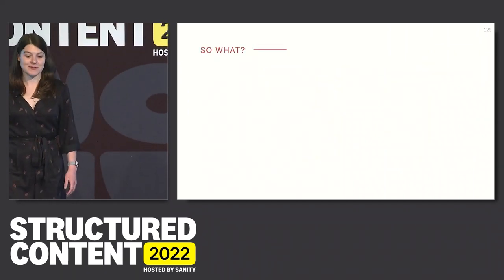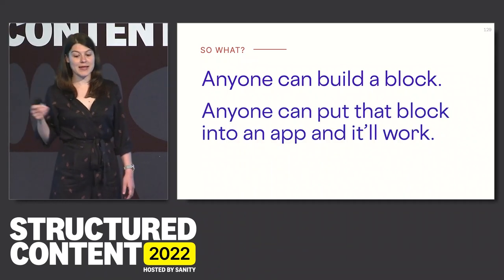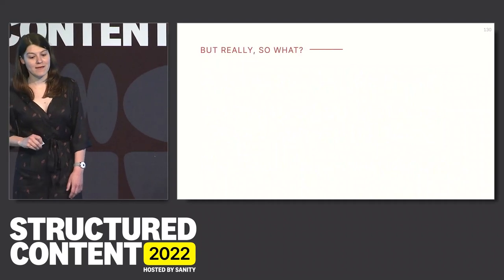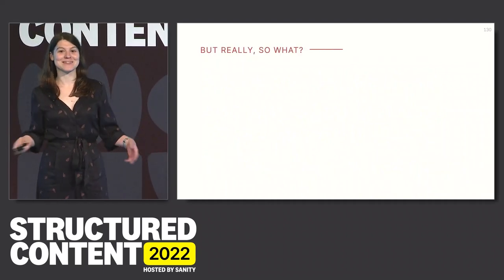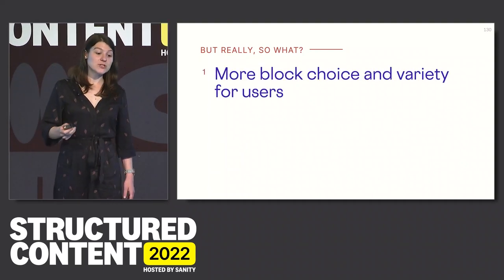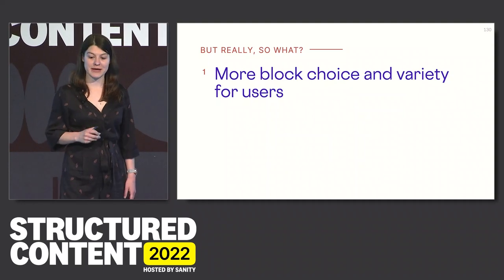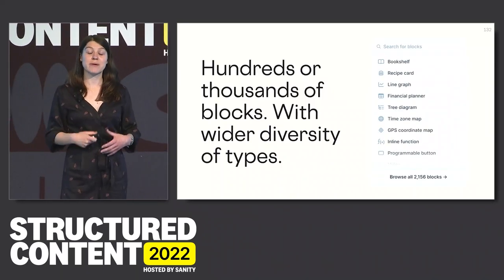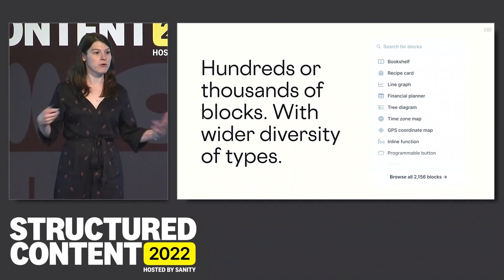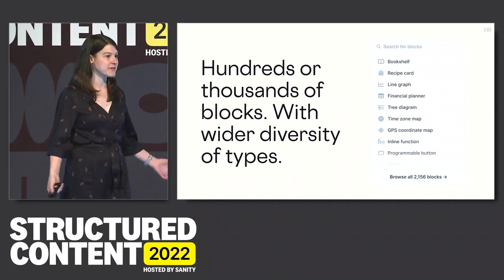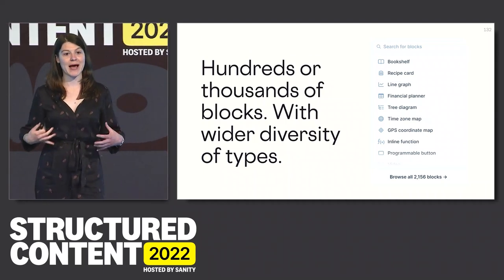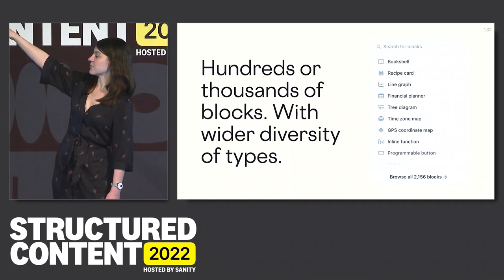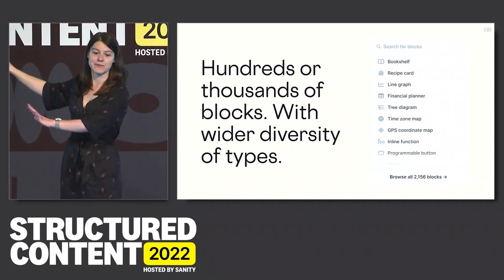So what does this mean practically for users? Well, users should have more block choice — a much wider variety of blocks to pick from. At the moment they have a limited list of around 30 basic blocks, which are cool but all quite generic. We would love a world where users could pick from hundreds or thousands of blocks — weirder blocks, like a recipe block, elaborate data visualization blocks — able to use the data they already have and present it in interesting ways that fit the data. I'll note the UX I've suggested here — a search bar drop-down browser — is terrible; no one should do this, I just need to illustrate the point.